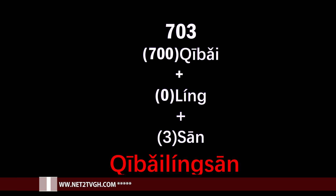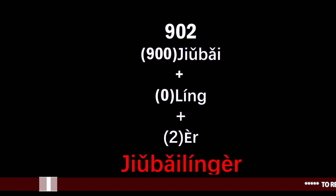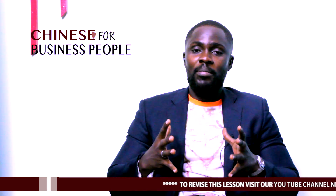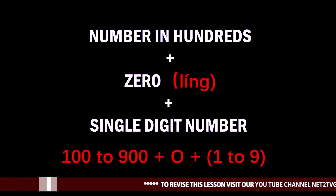Seven hundred and three: 'qi bai ling san.' Nine hundred and two: nine hundred is 'jiu bai,' zero is 'ling,' two is 'er' — so 'jiu bai ling er.' The formula again is: any number in the hundreds, plus zero which is 'ling,' plus a single digit number.